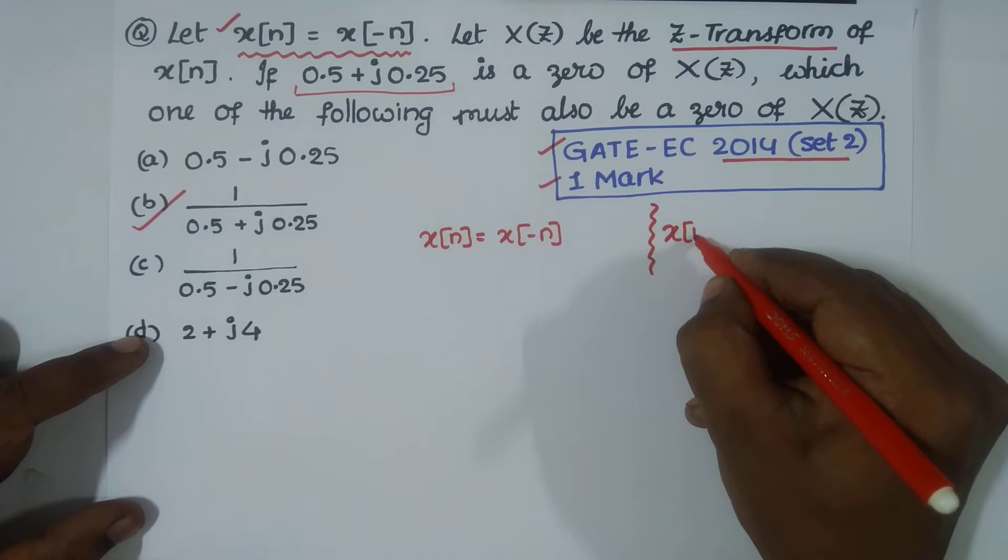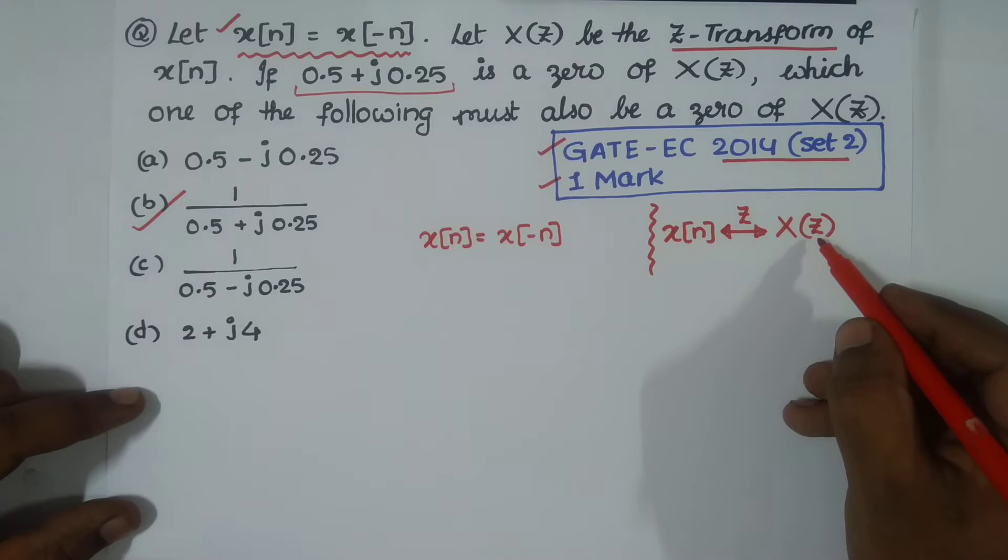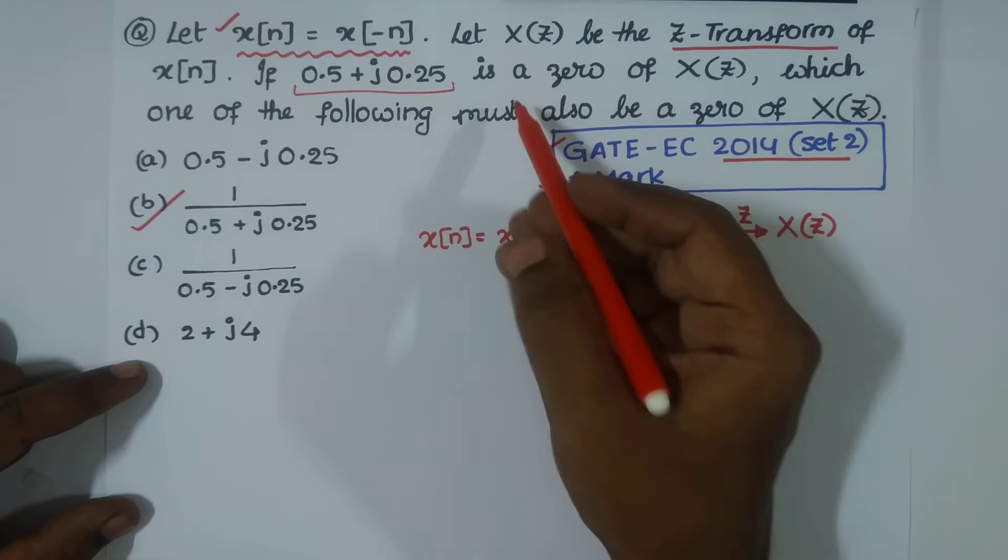If you take its Z-transform, you have X(Z), where Z is a complex variable, which we can show on a complex plane. Let X(Z) be the Z-transform of X[n].